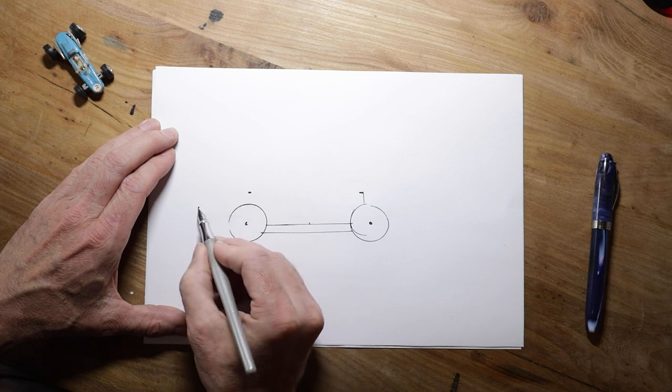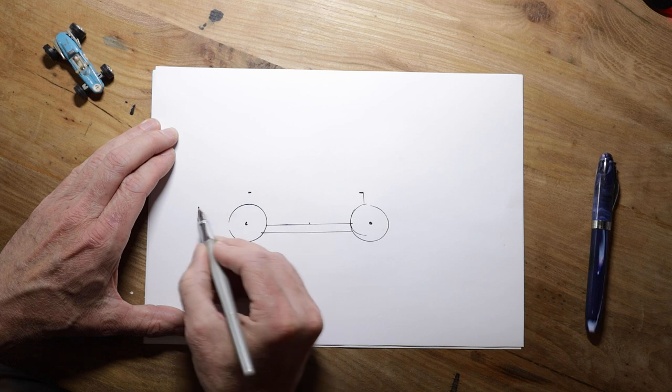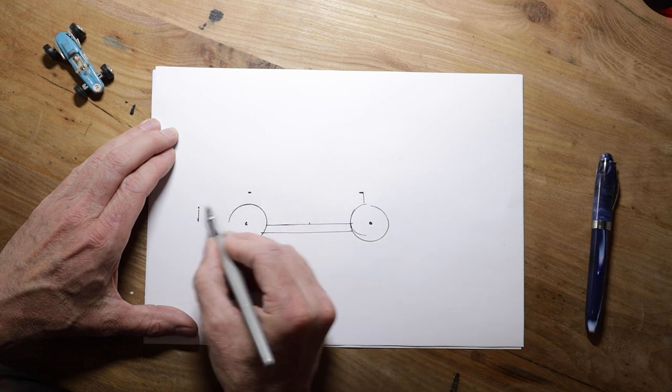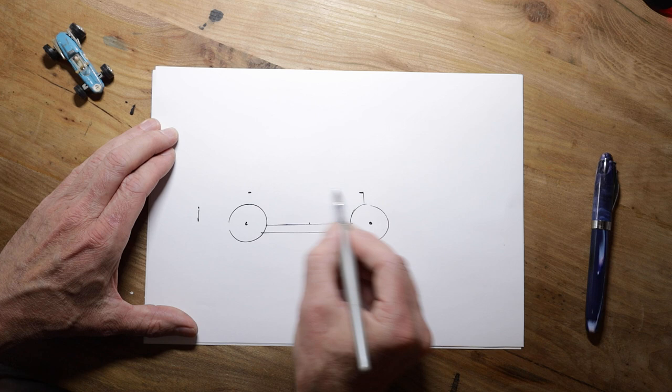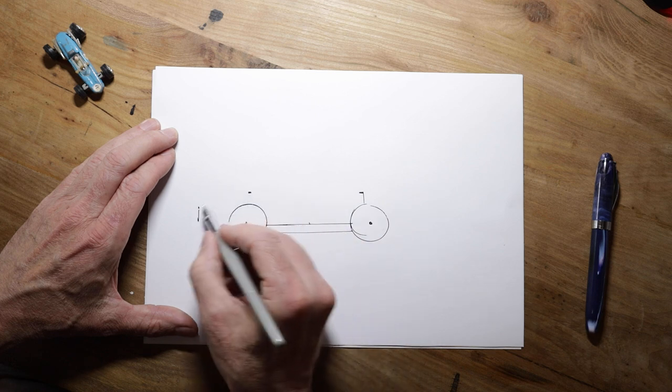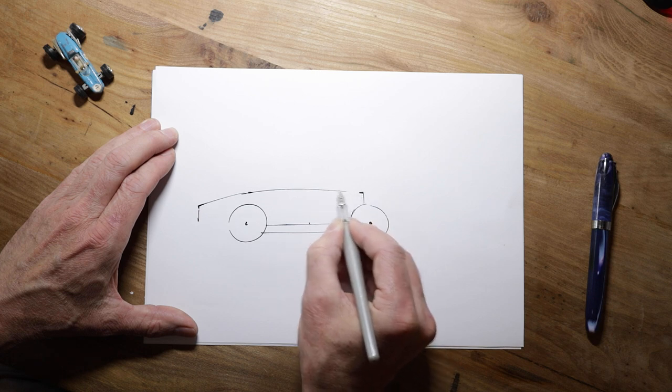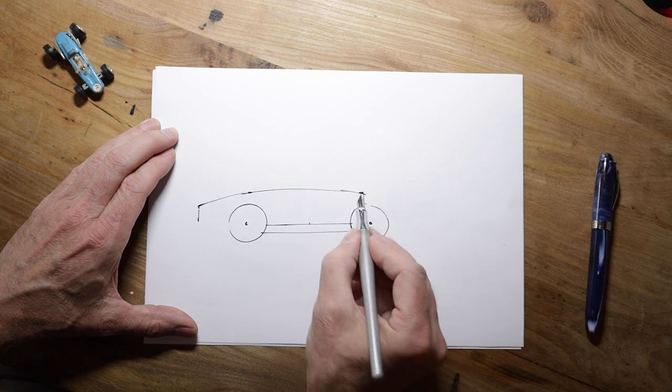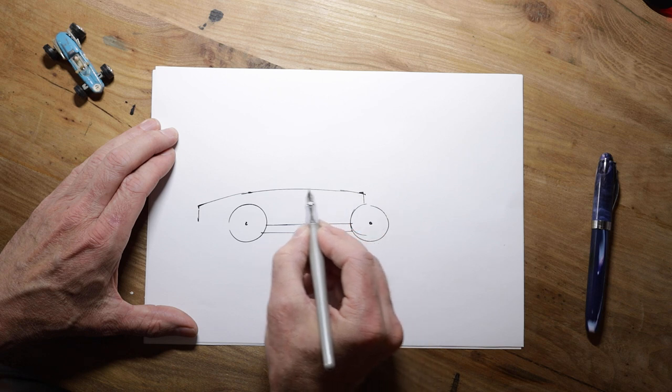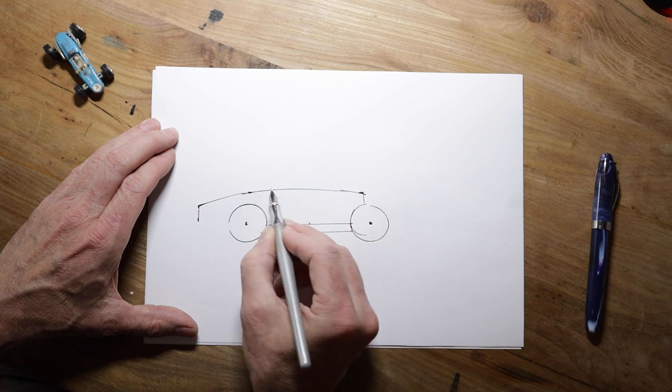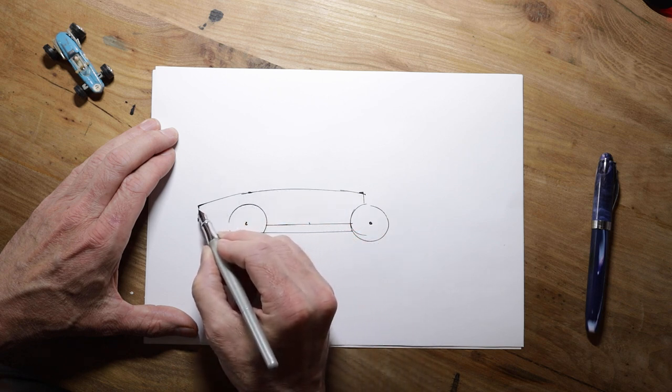So now we've got three marks. We've got this one here, that one, and that one. And we need a nice arc to go through all of those. Let's see how I can do. Something like that. So it goes up from starting at the radiator. It goes up slightly to the high point here, and then it curves back down towards the tail.